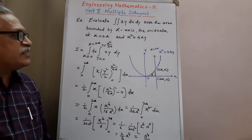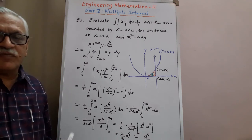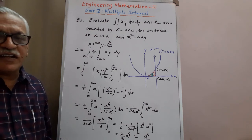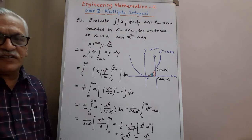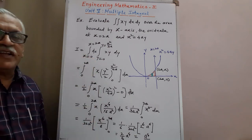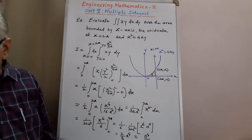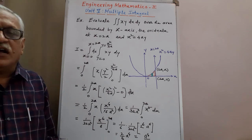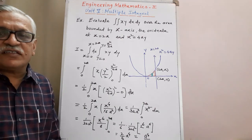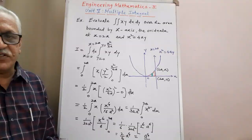This is the example where limits are not given; instead, a region is provided, and using that region we obtain the limits. After getting the limits, we apply the procedure for finding the double integration. If you are watching my videos, please like and share, and subscribe to my channel for later subjects. Thank you very much.